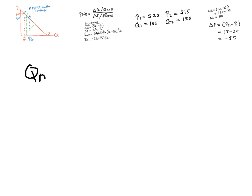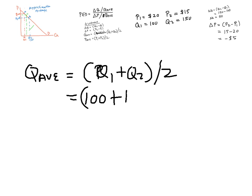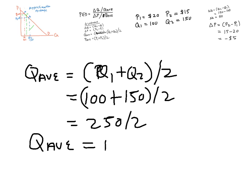Now we find our third unknown, average quantity. Q1 plus Q2 divided by 2. Q1 was 100, Q2 was 150, divide by 2. 250 divided by 2. Your average quantity is 125.